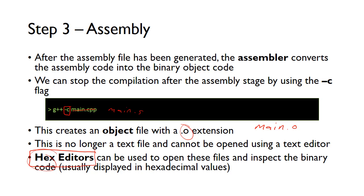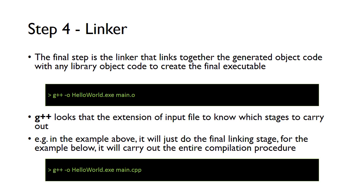We've now got the binary ones and zeros of our code. The final step is the linker — that's where it links together the generated object code with any library object code to create the final executable. You provide your object file and the -o flag with the name of the final output, and it will link it with any library code to create the executable. G++ looks at the input file extension: if it sees a .o file it knows it only needs to do the final linking stage, but if you provide main.cpp it knows it needs to do the entire compilation procedure.